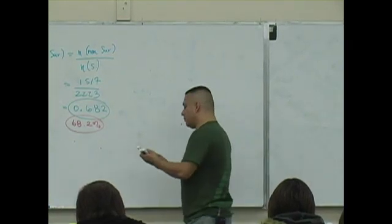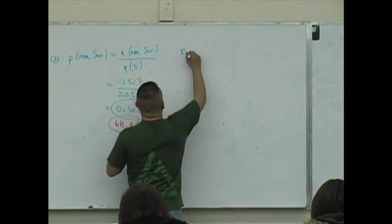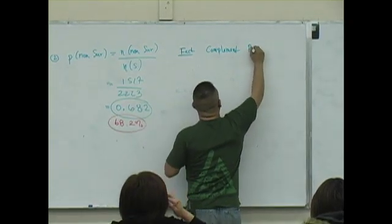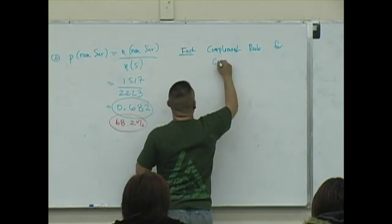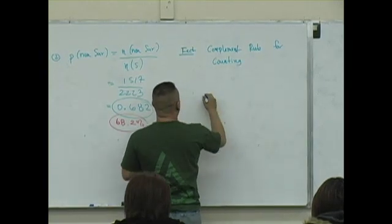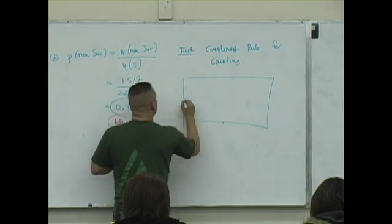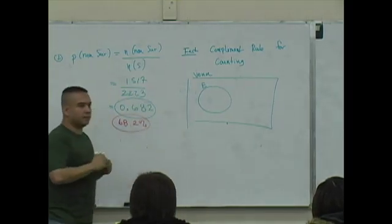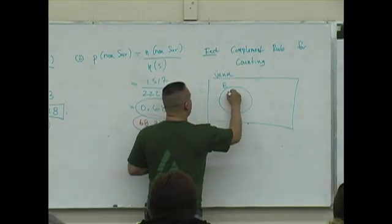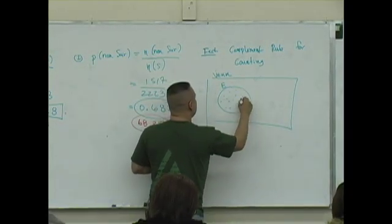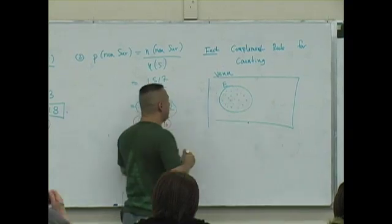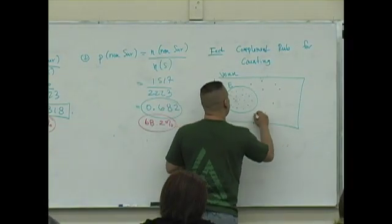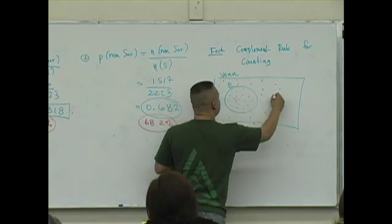Let me give you a fact called the complement rule for counting. If I look at a Venn diagram again, and I call this set E, and I count all these people inside region E, what would these people be in? What region are these people in?